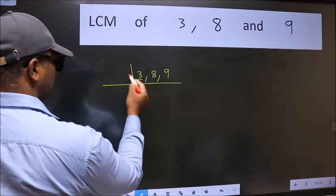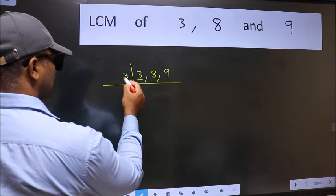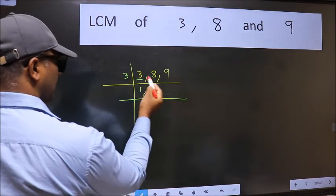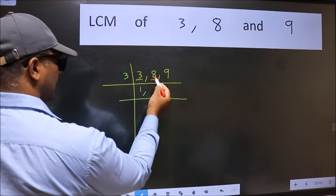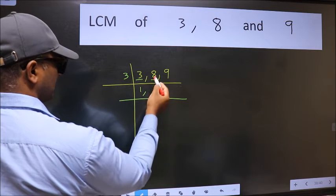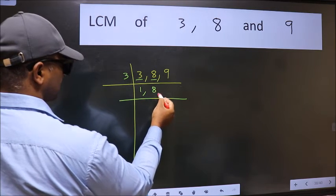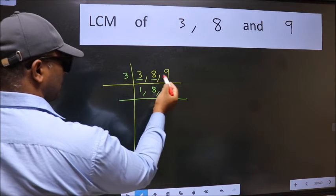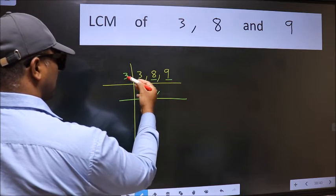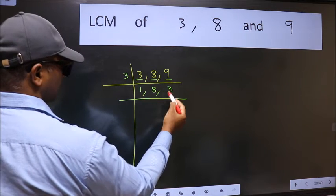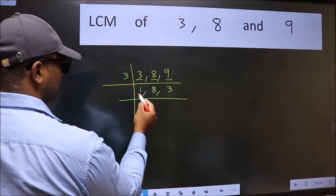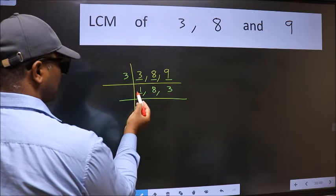3 is a prime number, so 3 times 1 is 3. The other number 8 is not divisible by 3, so we write it down as it is. The other number 9 — when do we get 9 in the 3 table? 3 times 3 is 9. Now we got 1 here.